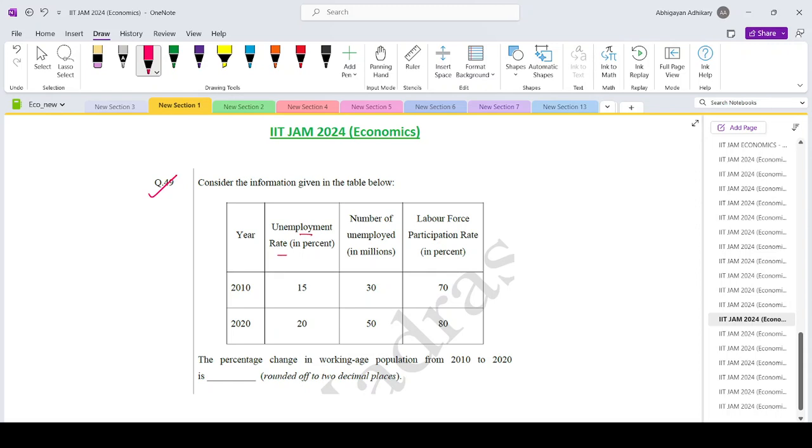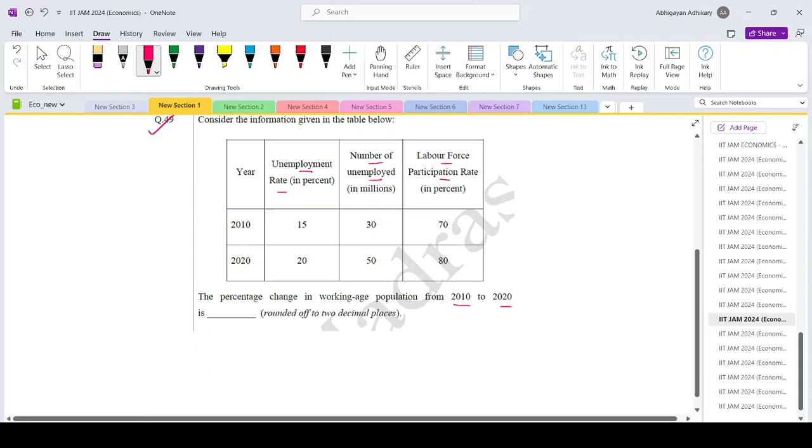Unemployment rate in percentage, number of unemployed in millions, and labor force participation rate. So the percentage change in the working age population from 2010 to 2020 is how much? Alright, so let me define a few notations.